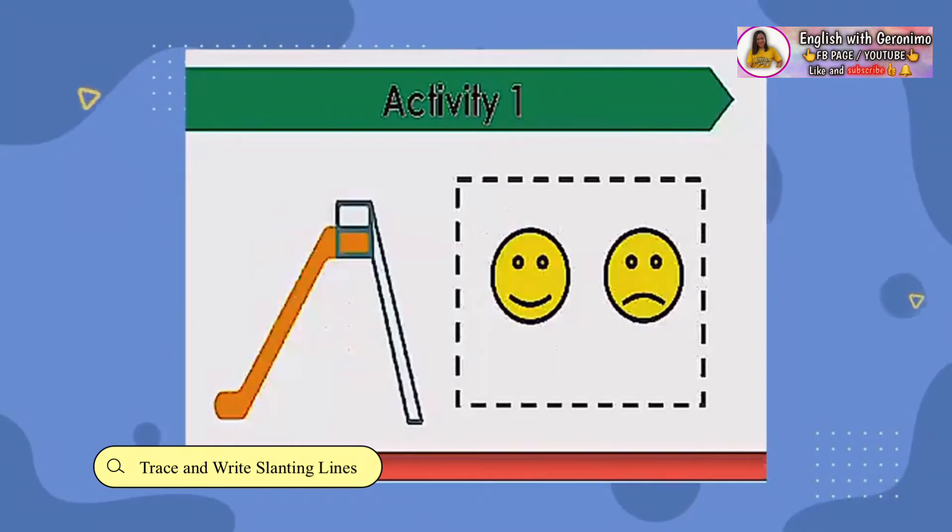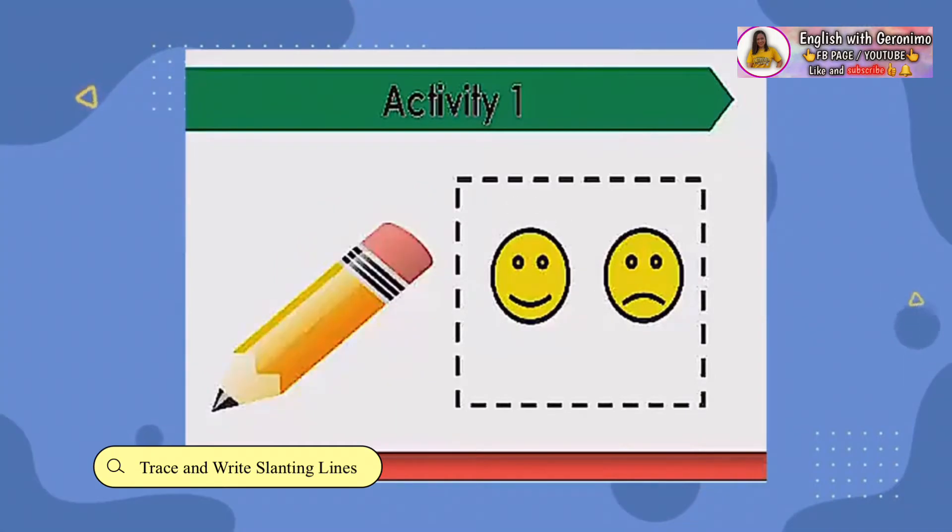Number 4. Is the object showing slanting line or not? Amazing! The slide shows a slanting line.